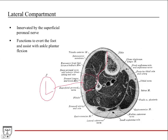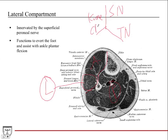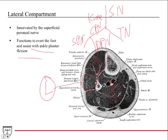The lateral compartment is innervated by the superficial peroneal nerve. The sciatic nerve branches into the tibial nerve and common peroneal nerve at the knee region; the common peroneal branches into the superficial and deep peroneal nerves. The deep peroneal nerve enters the anterior compartment; the superficial peroneal nerve enters the lateral compartment, innervating the two muscles there. The function of the lateral compartment is to evert the foot and assist with ankle plantar flexion.